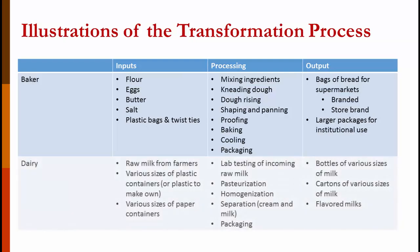Another example is a dairy. They receive truckloads of raw milk from farms and need plastic or cardboard to make or source their containers. They have to test incoming milk to ensure it meets standards, then pasteurize, homogenize, separate cream and milk, and package. Their outputs include small, medium, and large containers of milk in both plastic and paper, and they may also make ice cream and other milk products.